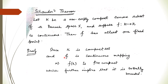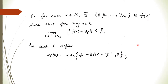Since K is compact and F is continuous, the image F(K) is pre-compact, meaning relatively compact, which further implies it is totally bounded. By the definition of totally bounded, for each N in the natural numbers there exist elements F(Y1), F(Y2), ..., F(YN) in F(K) such that for any X in K, the norm of F(X) − Yi is less than 1/N for some i.